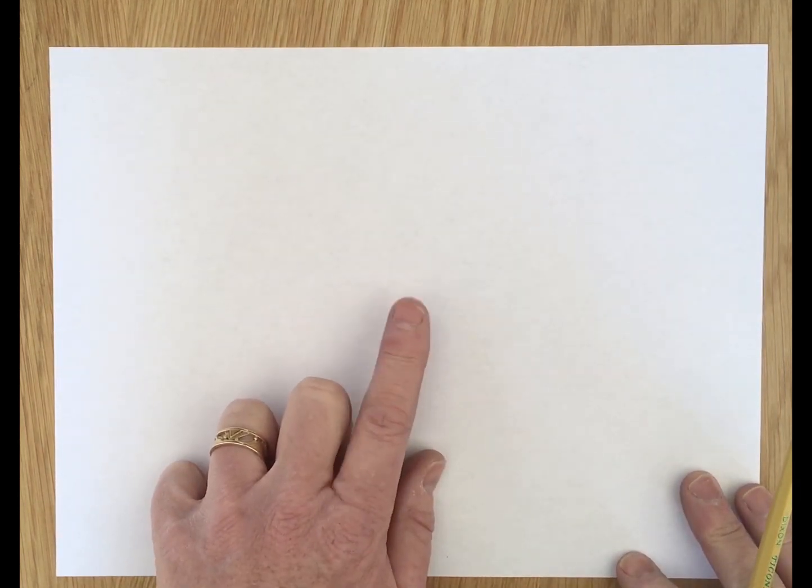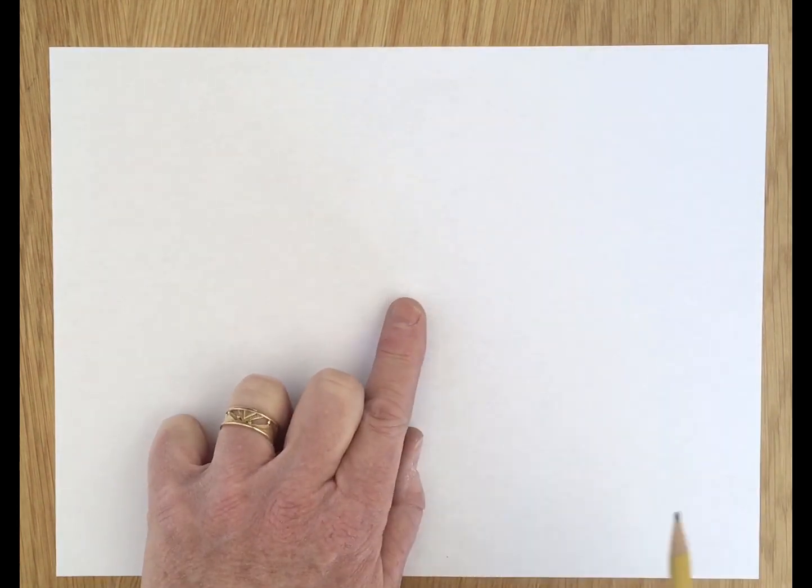Use any 8.5 by 11 photocopy paper, place it in front of you and find the center spot. Place your finger there just so that you have a reference.